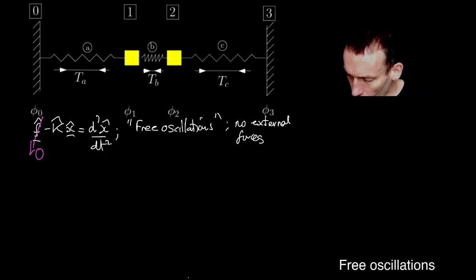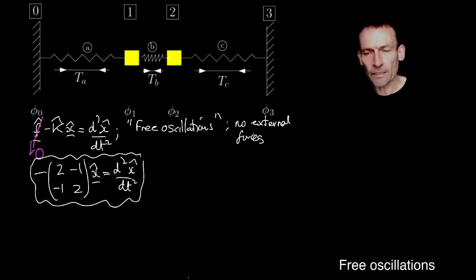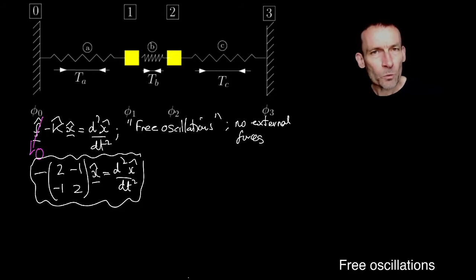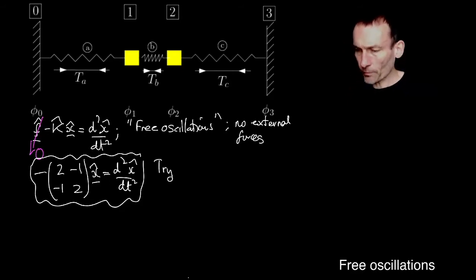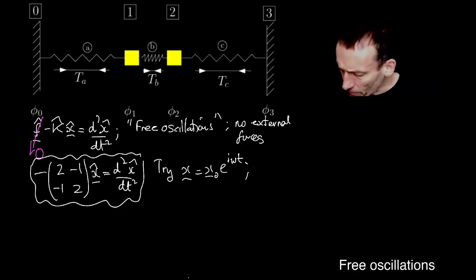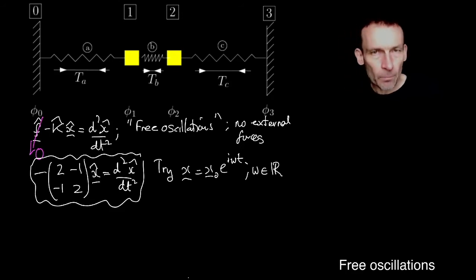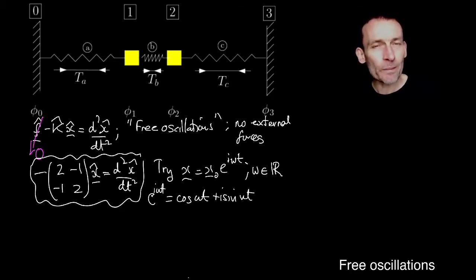You can see then that my equation reduces to minus K_hat * X_hat equals the second derivative. Now, I've noticed one thing: it's linear and has two time derivatives. So suppose I try X equals some constant vector X_0 times e^(i*omega*t), where I'm assuming for now that omega is a real number. If you remember Euler's formula, e^(i*omega*t) = cos(omega*t) + i*sin(omega*t). So these solutions will be oscillatory in time, and X_0 is just a constant vector.